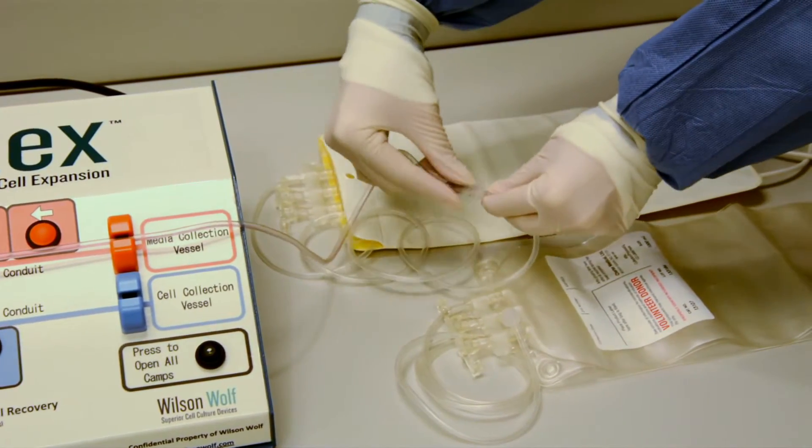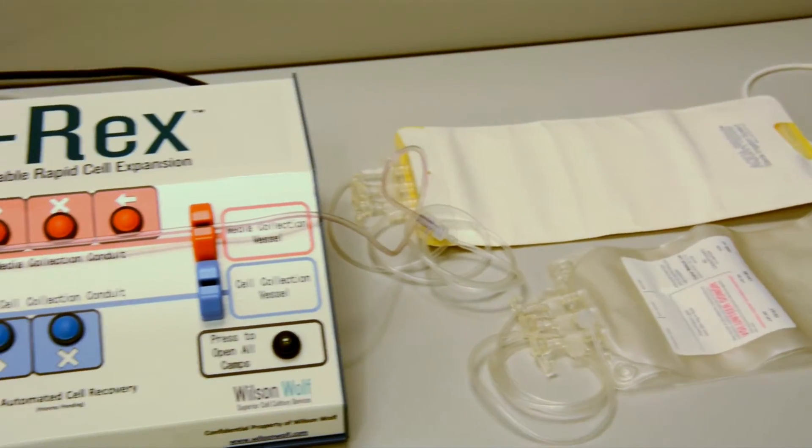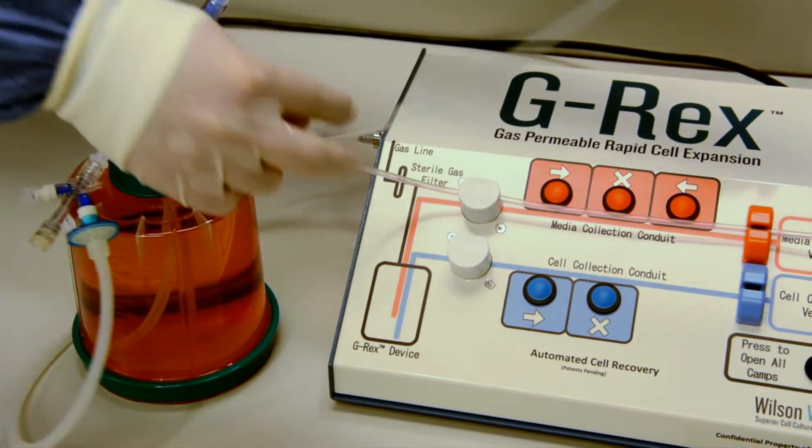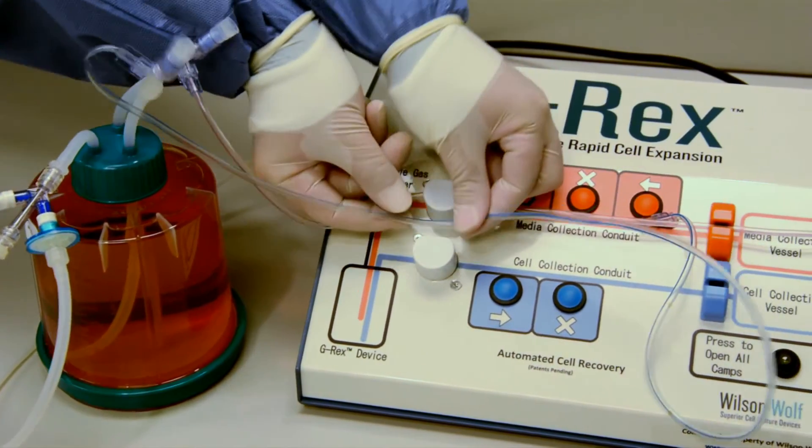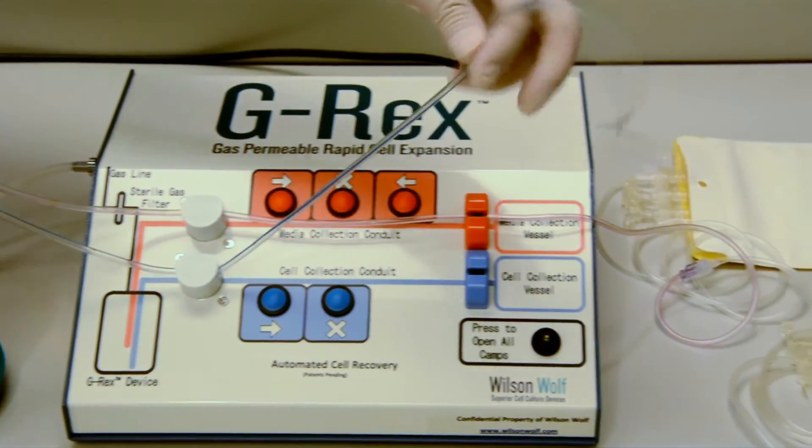The media line is connected to a sterile media collection bag. Here, the bag is placed inside an aqua press pouch, which we will later use to rinse the G-REX after the cell harvesting stage. The cell collection line is set up similarly and connected to a sterile cell collection bag.